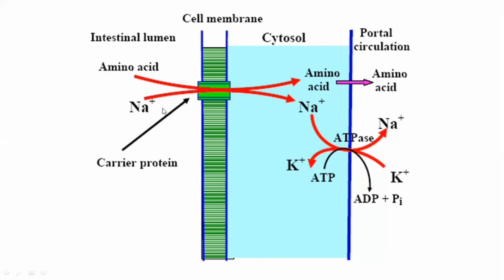The amino acid attaches on one side of the carrier protein, sodium attaches on the other side, and both are transported into the intestinal cell. Once inside the enterocyte, the amino acid enters the blood circulation, while the sodium is exchanged via the sodium-potassium pump — three molecules of sodium go out and two molecules of potassium come inside. This exchange requires ATP, which is converted to ADP, making this an energy-requiring process.